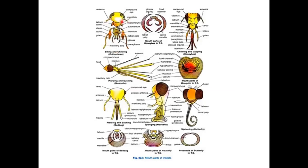The first type is the biting and chewing type mouthparts, which are present in Orthoptera and other insects. The second is the chewing and lapping type of mouthparts present in honeybees. The third is the piercing and sucking type, found in mosquitoes and also in bugs. The fourth is the sponging type of mouthparts found in housefly. The fifth is the siphoning type of mouthparts present in butterflies.